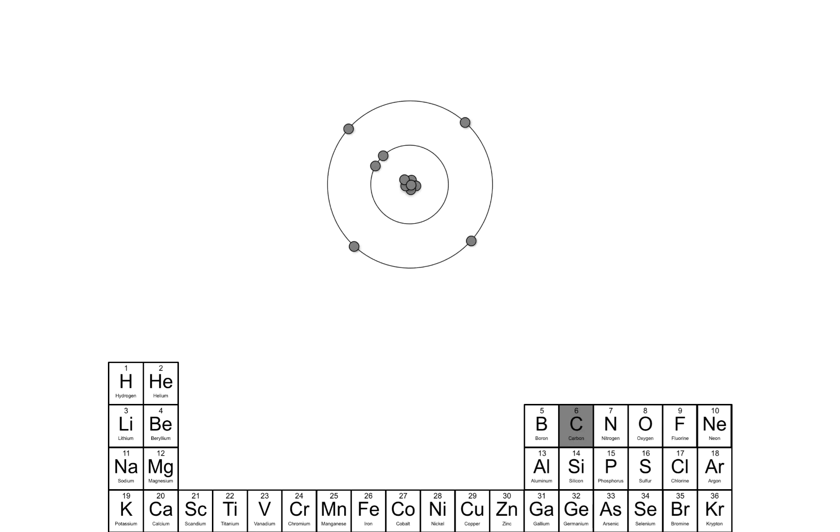Now let's move on to carbon. Since carbon is element six, it has six protons in the nucleus and six electrons. But here the situation is more complex. We have a pair of electrons orbiting in an inner orbital and four single electrons orbiting in an outer orbital. So what's this about? We need to look a little bit more in depth at the periodic table to find out.